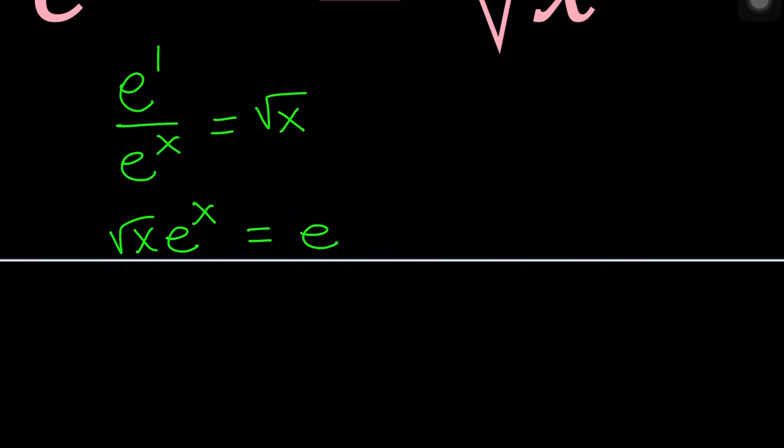But at this point, again, it's always a good idea to guess and check. But let's go ahead and manipulate the equation on the left hand side. And to do that, we're going to go ahead and square both sides. And when we square, square root of x is going to become x and e to the power x squared is just e to the power 2x equals e squared. Great.